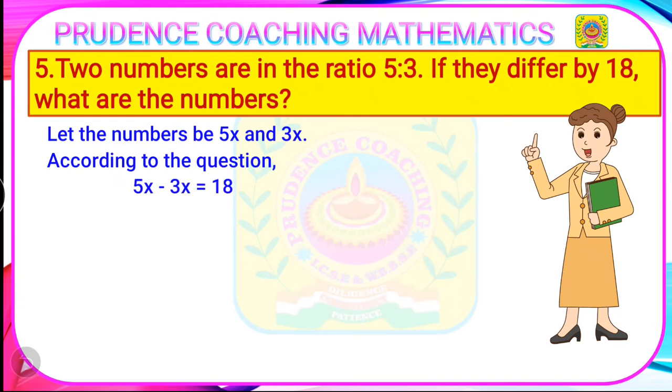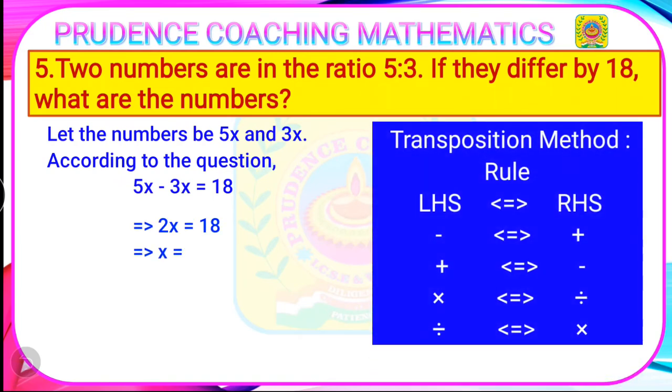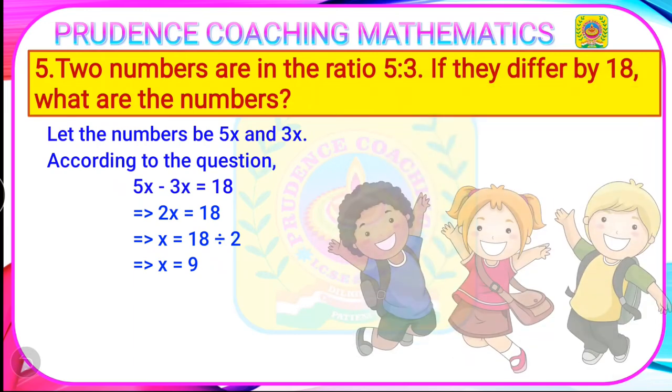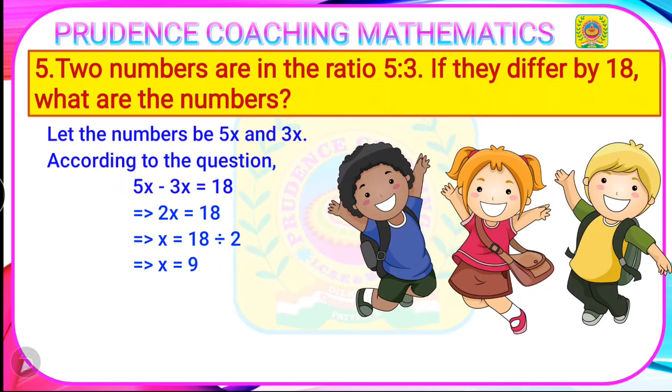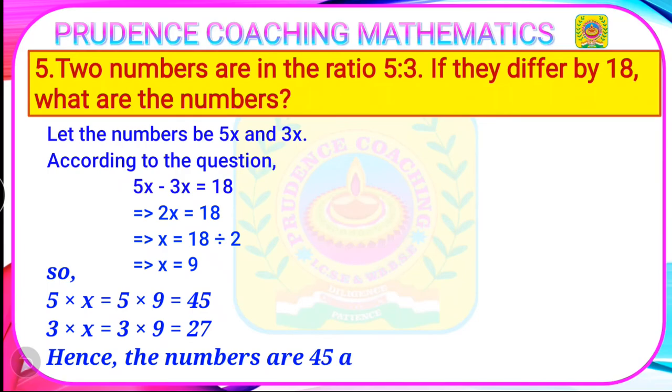So now you will start solving. 5x minus 3x is 2x. 2x equals to 18. So the value of x will be 18 divided by 2, that is 9. So here the highest common factor is 9. So to get back the original number, which we have assumed 5x and 3x, we need to multiply back the number with 9. So 5 into x means 5 into 9, that is 45. 3 into x means 3 into 9, that is 27. So the numbers are 45 and 27.